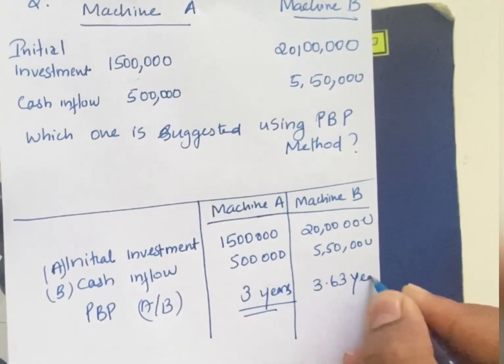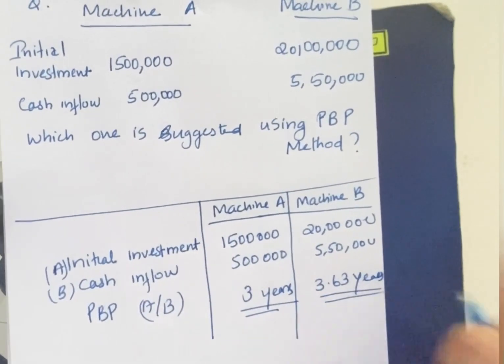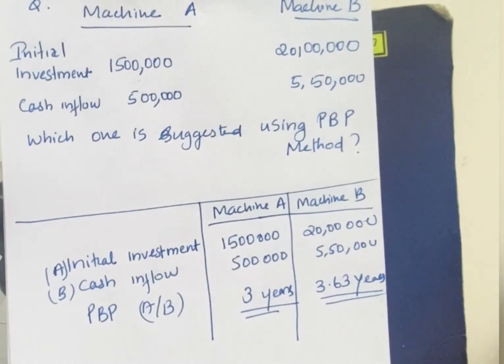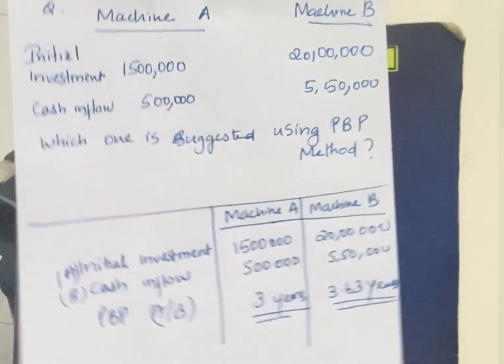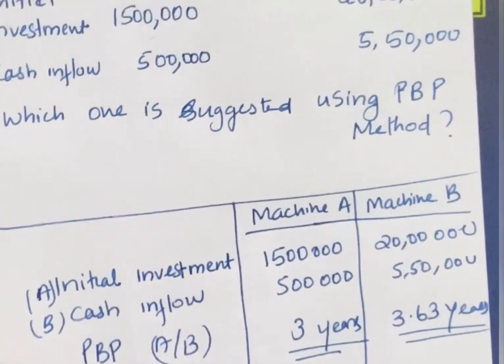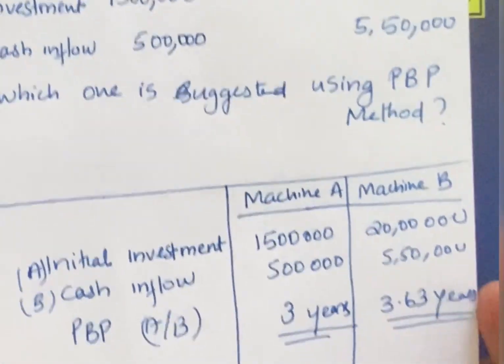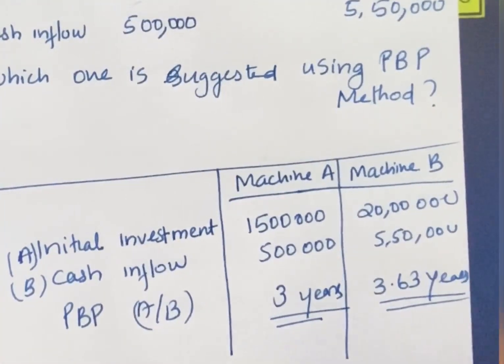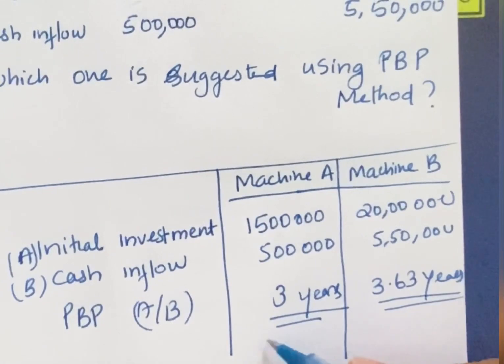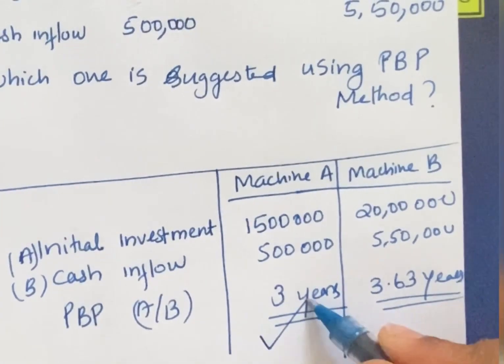Here. Machine A is the same. Payback period — we will obtain it. Machine A is the same.